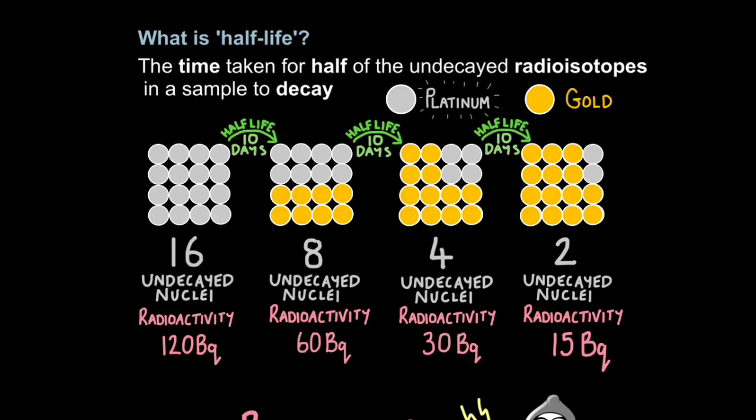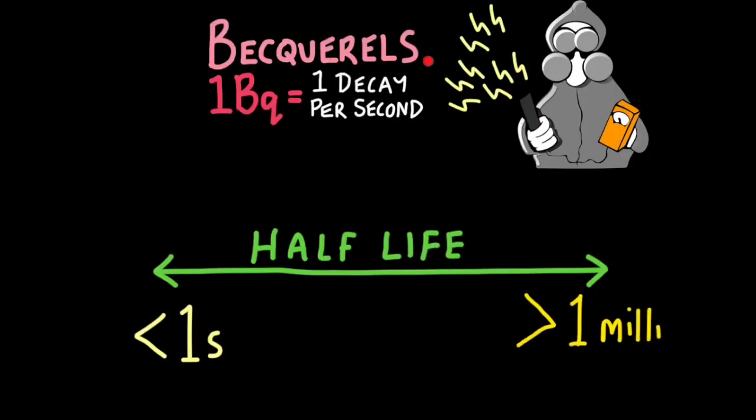But you could also do a count of radioactivity. For example, you could hold a GM tube up to this, which will start clicking away, and it will give you a reading in a unit called becquerels, or BQ. So we can see we have 120 becquerels here, 60 here, which is halved, 30 here, which is halved again, and 15 here, which is halved again. Becquerels is the unit of radioactivity. One becquerel equals one decay per second. In other words, one becquerel is when one radioactive particle enters the GM tube and causes the ionization of an atom. Whereas 50 becquerels would be 50 ionization events detected by our GM tube.